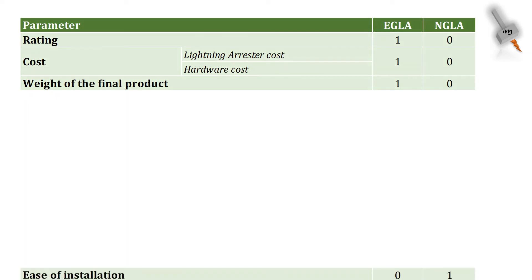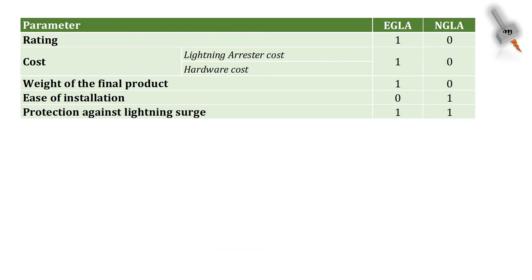In terms of ease of installation, NGLA has the advantage over EGLA since it is easy to install NGLA regardless of the new or old transmission lines. In terms of protection against lightning surge, both EGLA and NGLA has the same level of advantage, but at the same time for switching and TOV protection, NGLA has the advantage.